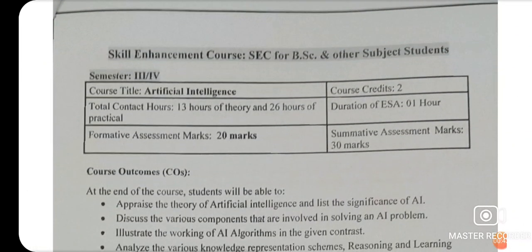You can see this is a SEC paper for BSc and other subject students — those who are studying in the third and fourth semester. They may study artificial intelligence as a SEC paper. This SEC paper is for 50 marks: 30 for the summative assessment marks, that is external examination, and formative assessment marks is 20, that is internal.